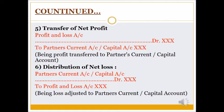Adjustment number 5 is transfer of net profit. When we close the Profit and Loss Account and get net profit, the journal entry is: Profit and Loss Account debit to Partners Current or Capital Account — so it comes on the credit side of Partners Capital or Current Account. Adjustment number 6 is distribution of net loss. If the firm has suffered a loss, the entry is: Partners Current or Capital Account debit to Profit and Loss Account — so net loss appears on the debit side.